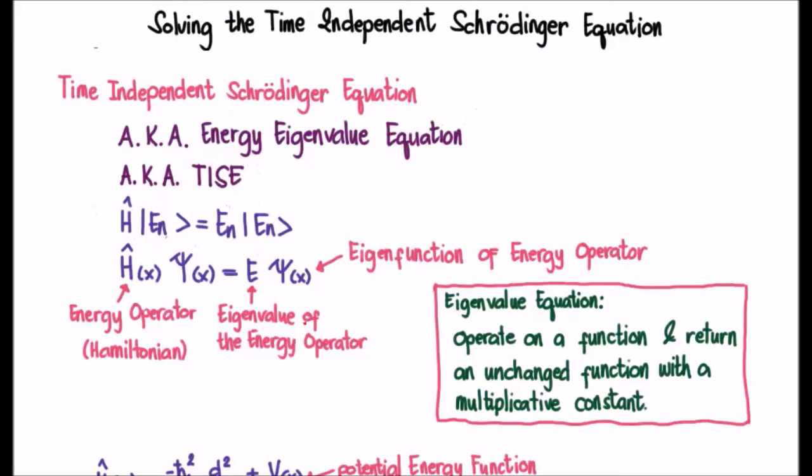But if you look closely, the Hamiltonian is acting on your ket and it's giving back the same ket but with a multiplicative constant. Alternatively, the Hamiltonian is acting on the wave function and it's giving back the same wave function but with a multiplicative constant.